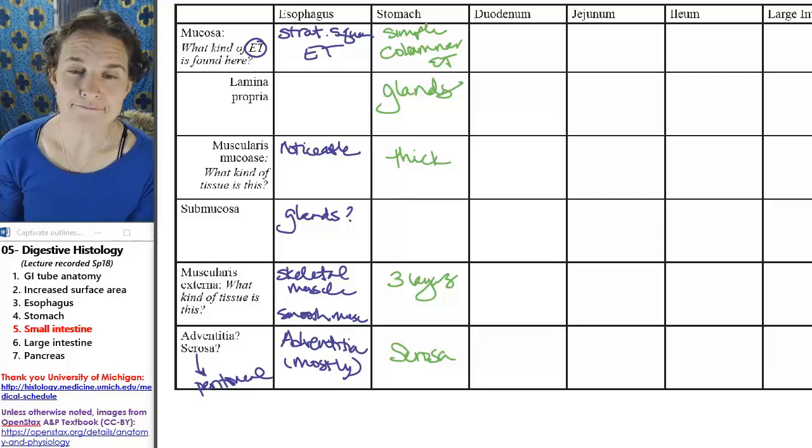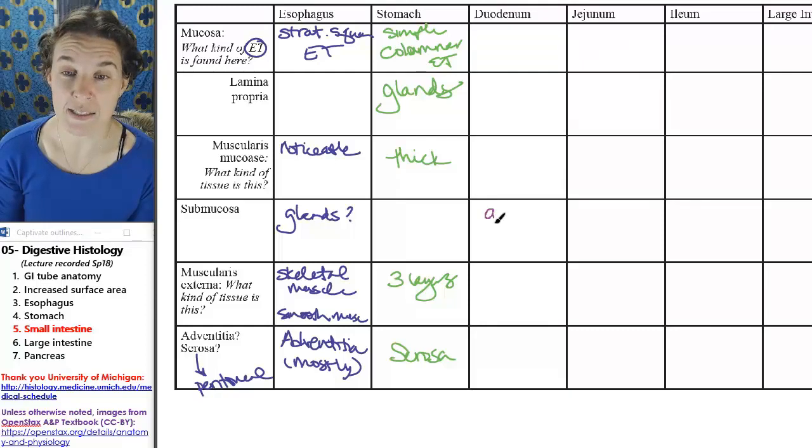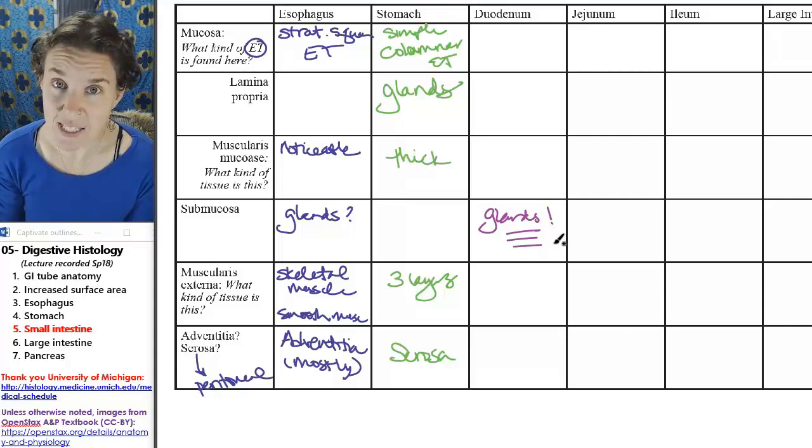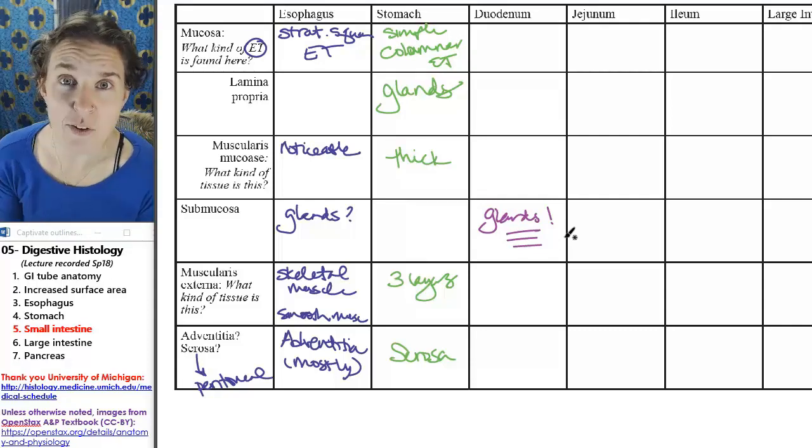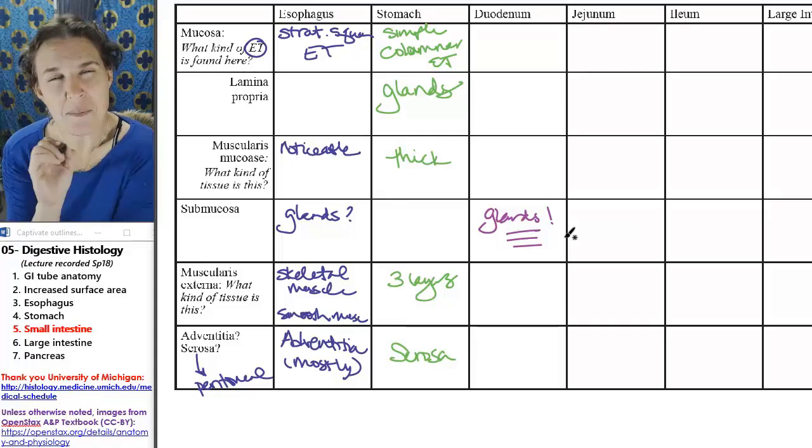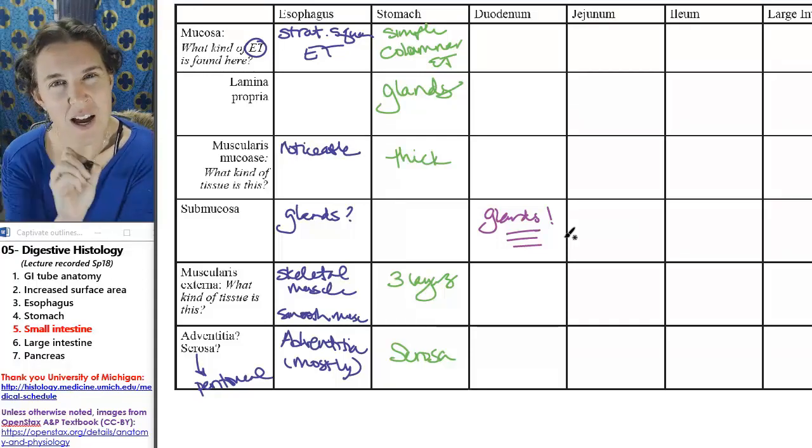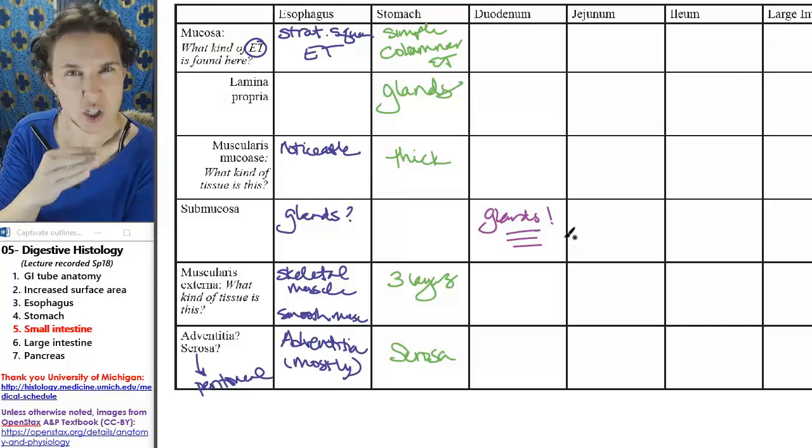The duodenum has an unbelievable number of glands—like crazy glands everywhere in the submucosa. And what that means is that you're going to have to identify muscularis mucosae in order to be sure that you are actually in the submucosa looking at all those glands.